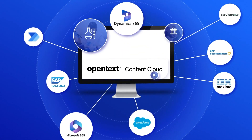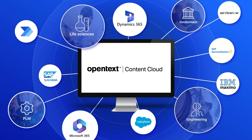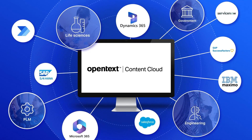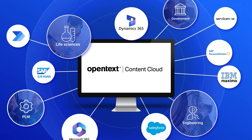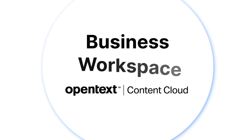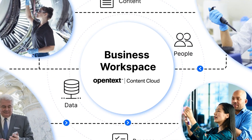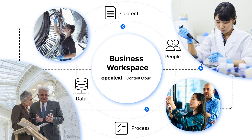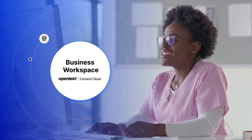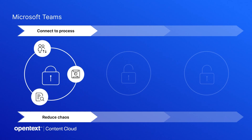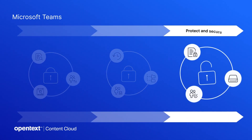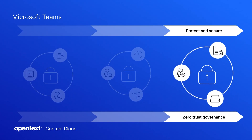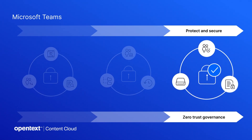Imagine having an information hub integrated within your Microsoft Teams interface and being able to sync that hub with other essential applications from SAP, Salesforce, and more. With OpenText, information flows effortlessly across your enterprise tools, giving users the information they need to make informed decisions when and where they need it. By automatically provisioning relevant and connected teams and managing them through their lifecycle, OpenText adds a layer of active protection and long-term governance and compliance without additional user requirements.